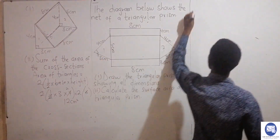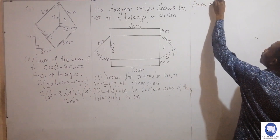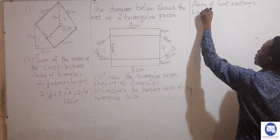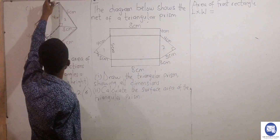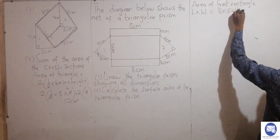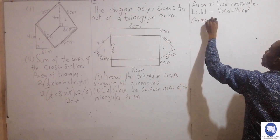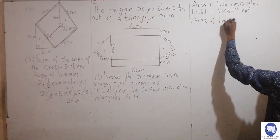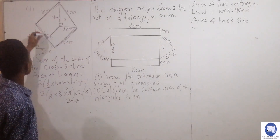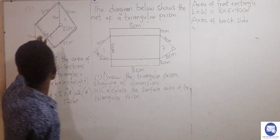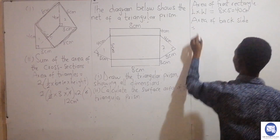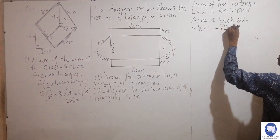Now let me go to the front rectangle. The area of the front rectangle is length times width. The length is eight and the width is five, so eight times five is 40 centimeters squared. Then the area of the back rectangle — the side that is facing the other end — is eight times four, which gives 32 centimeters squared.